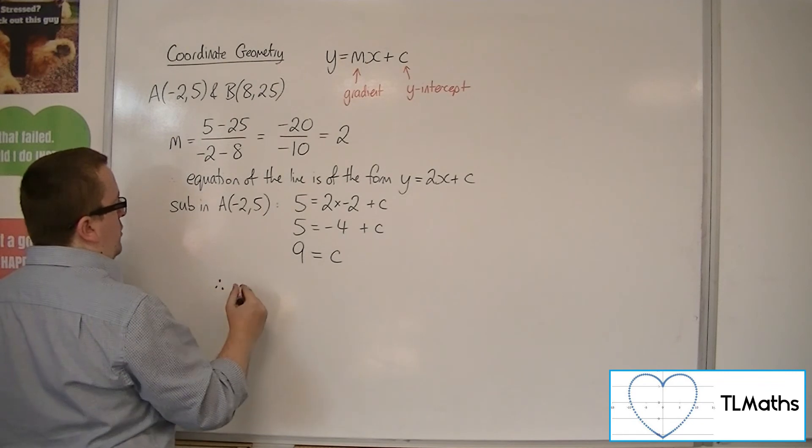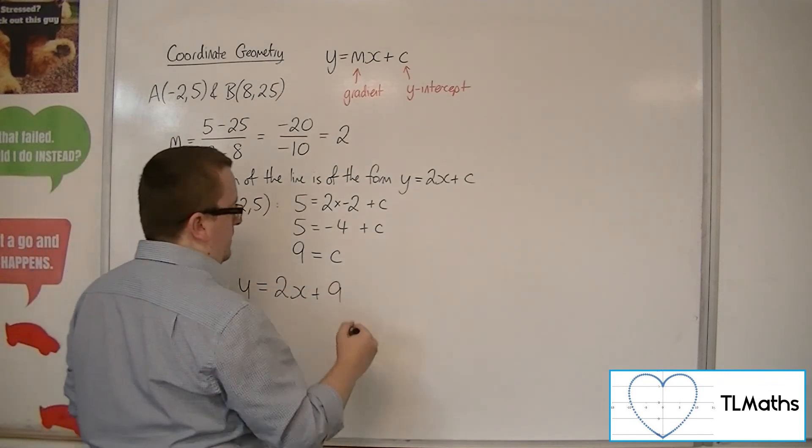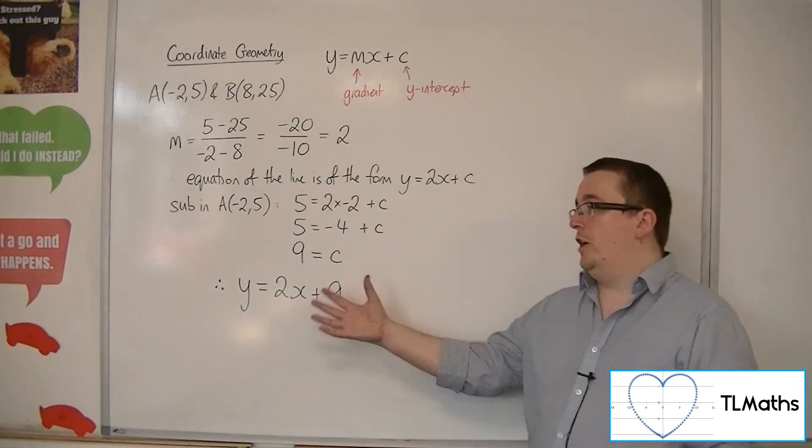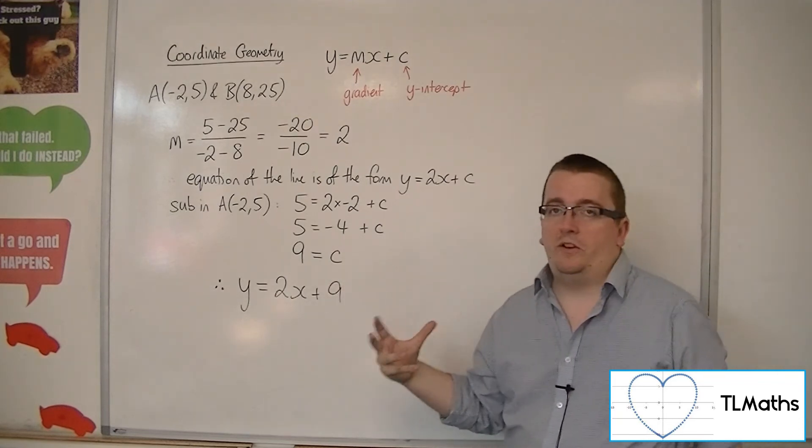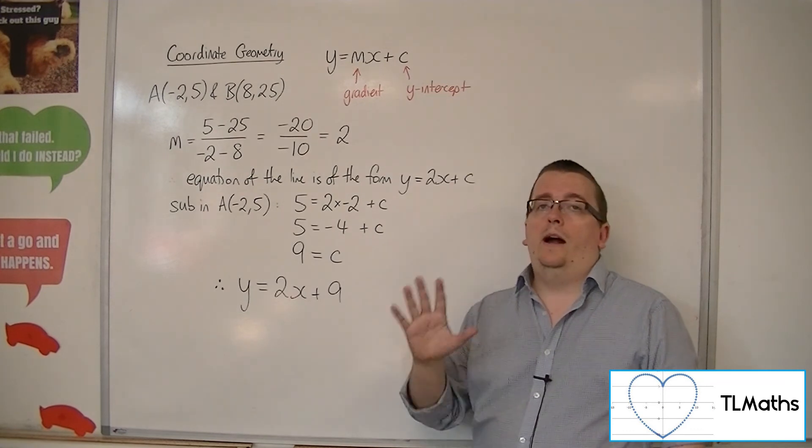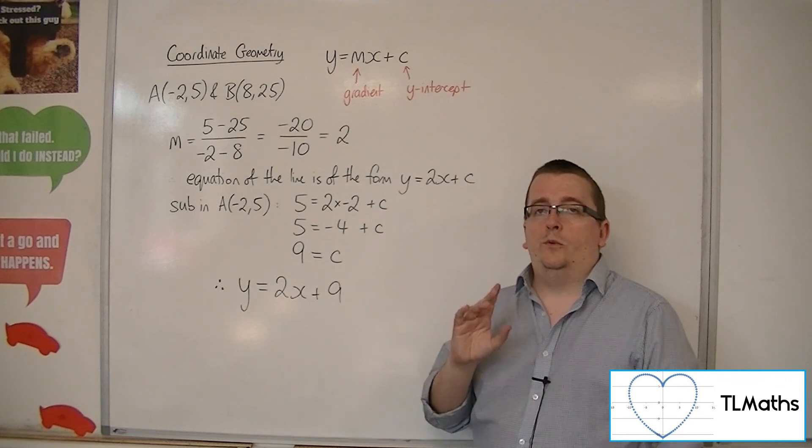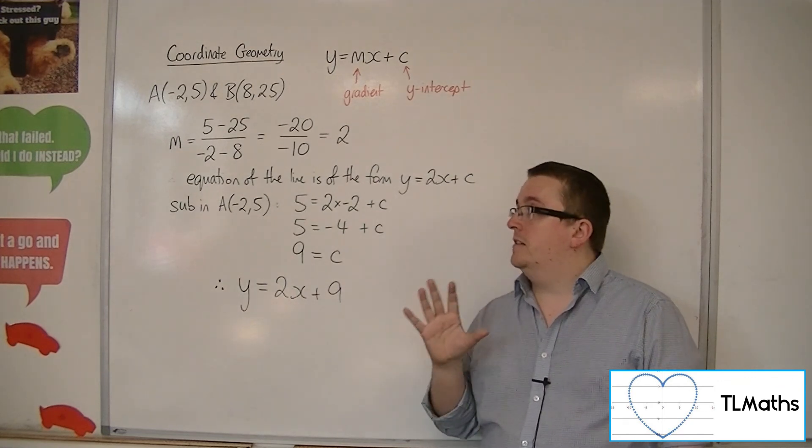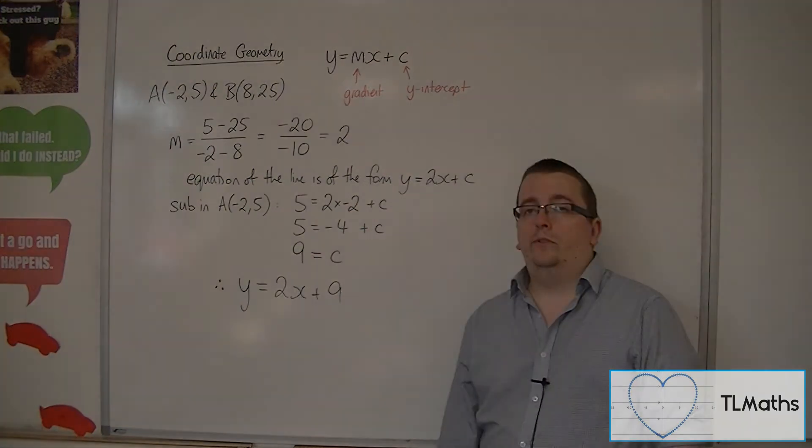So therefore, our equation is y is equal to 2x plus 9. And that's how you can find the equation of a line going through two points using this y equals mx plus c method. In the next video, I'm going to show you the second method, y minus y1 equals mx minus x1. And you'll see that it is faster and more convenient to use.